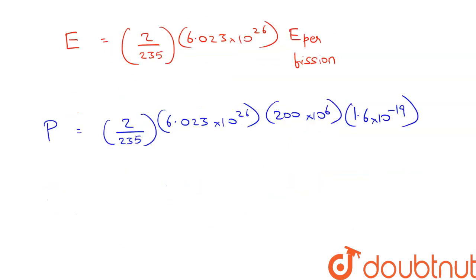This is the energy released by the 2 kilograms of uranium, and divided by the time taken is 30 into 24 into 3600.